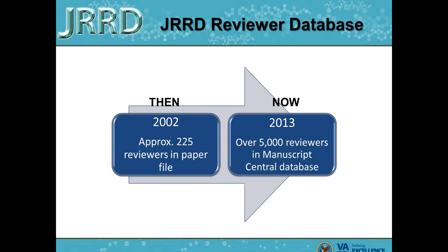We're going to focus a lot on then and now to give people a frame of reference for how far we've come. The JRRD reviewer database these days is comprised of people who review for us as well as people who have submitted articles for consideration, and a lot of times these people are asked to become reviewers themselves. In 2002, there were approximately 225 reviewers in the paper file. In 2013, we have over 5,000 active reviewers in the Manuscript Central database.